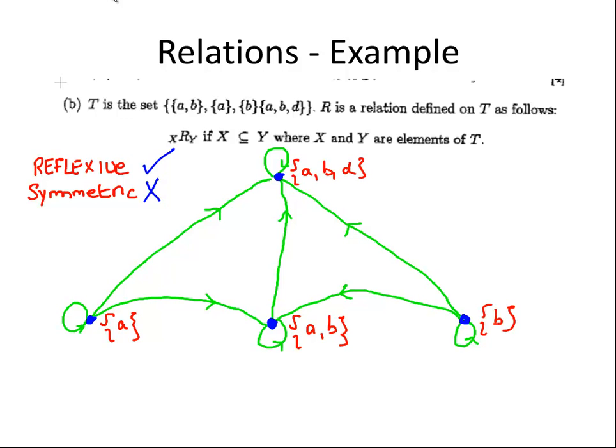So is it transitive? So if {a}—now let's just disregard the fact that {a} is a subset of {a,b,d} directly, let's just disregard this edge for a minute. {a} is a subset of {a,b}, and {a,b} is a subset of {a,b,d}. Does that make {a} a subset of {a,b,d}? Yes, it does. Likewise, for every other way you can look at it, {b} is a subset of {a,b}, and {a,b} is a subset of {a,b,d}. So this relationship is transitive. Okay, so it's not symmetric, but it is reflexive and transitive.